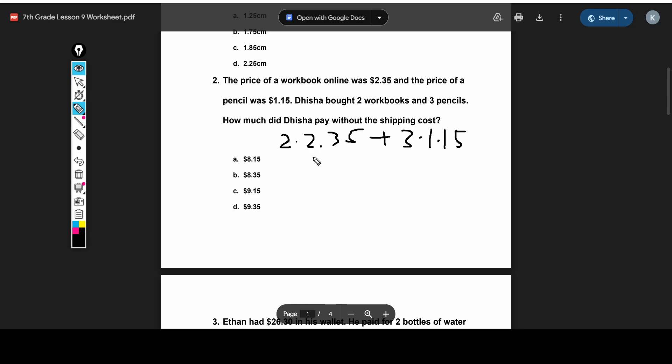So if you do the multiplications first, because if you remember your order of operations, multiplication and division come before addition and subtraction. And so we multiply this out. You get 4.70 plus 3.45. And then when you add those together, you'll get $8.15. So you get A.